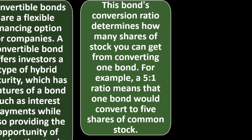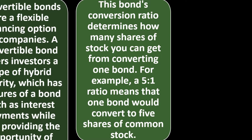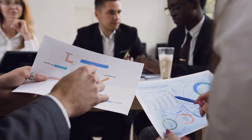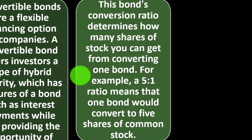Understanding convertible bonds: convertible bonds are a flexible financing option for companies. A convertible bond offers investors a type of hybrid security which has features of a bond such as interest payments, while also providing the opportunity of owning the stock. The bond's conversion ratio determines how many shares of stock you can get from converting one bond. For example, a five-to-one ratio means that one bond would convert to five shares of common stock.